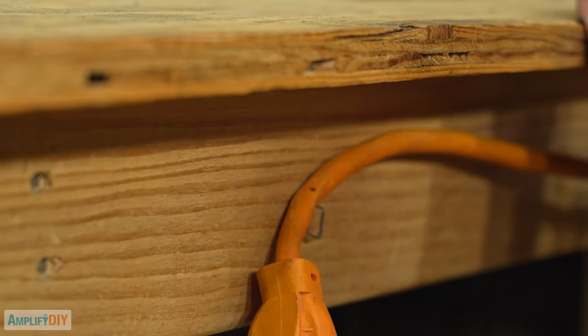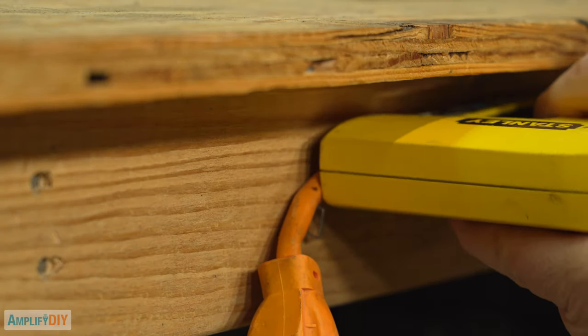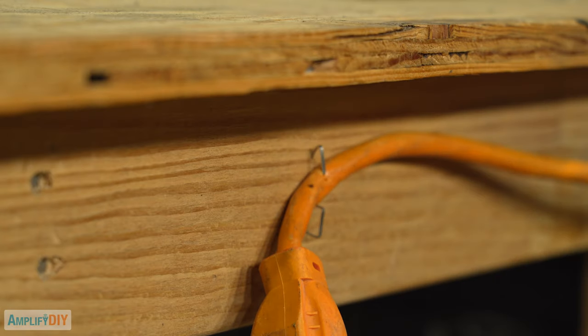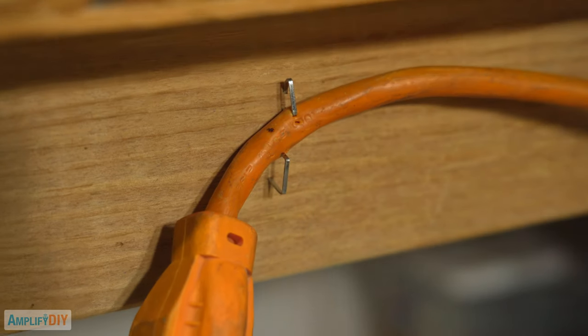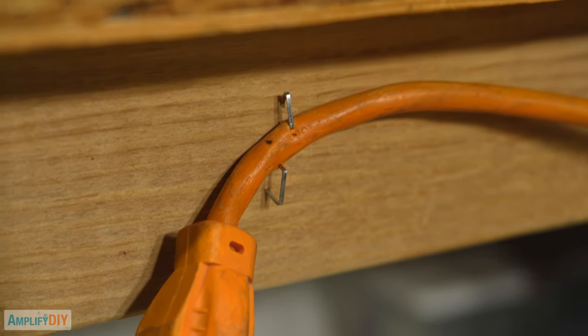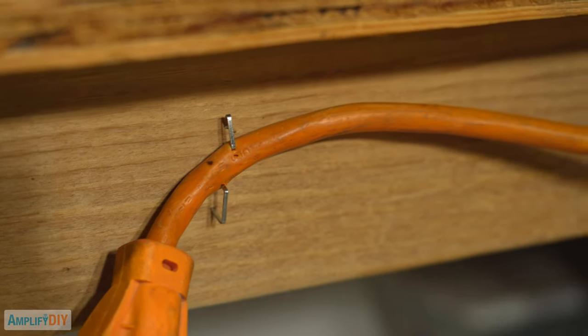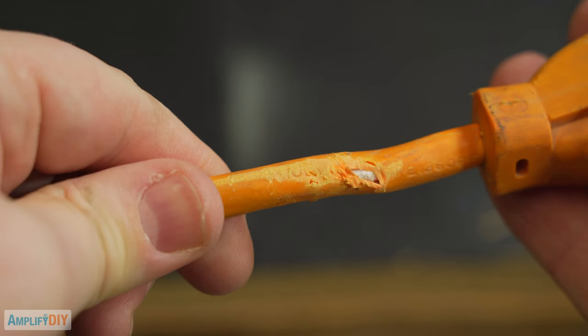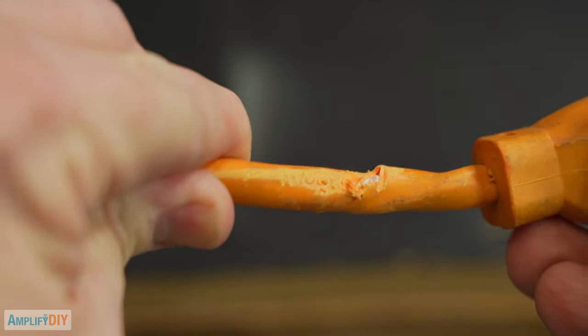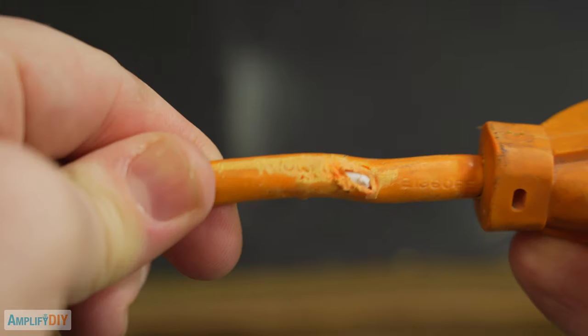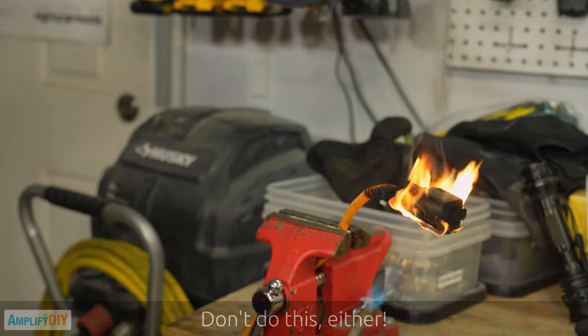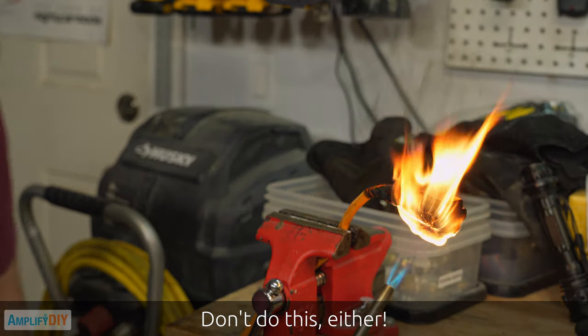Bad dog. Or maybe you lent it to a buddy and they used a staple gun to attach it and missed a few times. Yeah don't do that either. Or maybe it just has some abrasion on the insulation that's damaged it and now you can see the conductors that are inside and maybe it's had a little bit of heat damage.